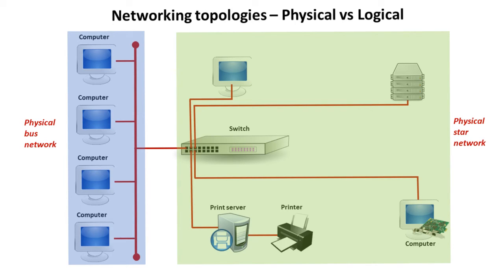Let's talk about the difference between a physical and a logical topology, because the specification says you must know about a physical star topology and a logical bus topology. Here we see two network topologies used within a single local area network. On the left of this switch we have a single cable and a bus network — physically wired as a bus network. On the right, we have a physical star network, where the computers are each connected with their own dedicated cable. The physical and logical topology, however, are different. Although this part of the network is wired in a physical star topology, it could operate logically just like a bus topology.